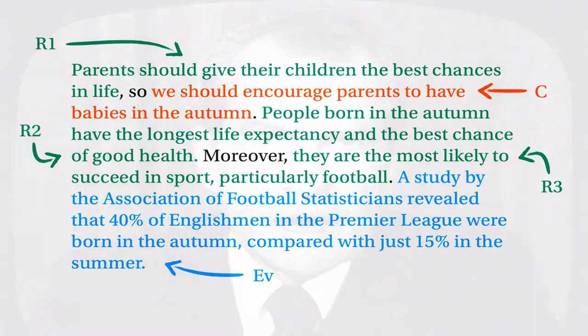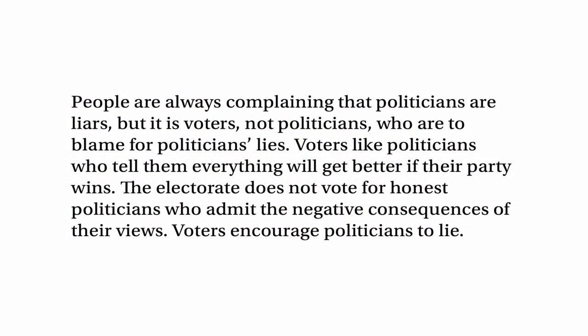Let's look at one more argument — this one's about lying politicians. This is a picture of President Richard Nixon, a president who is very famous for having lied. Hopefully you may have heard of the Watergate scandal — if you haven't, you should possibly look it up. Here's the last argument: people are always complaining that politicians are liars, but it's voters, not politicians, who are to blame for politicians' lies. Voters like politicians who tell them everything will get better if their party wins. The electorate doesn't vote for honest politicians who admit the negative consequences of their views. Voters encourage politicians to lie. Pause the video and have a think about what the conclusion of this argument is.